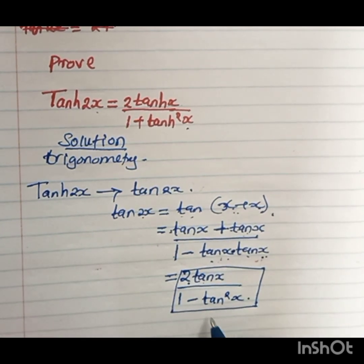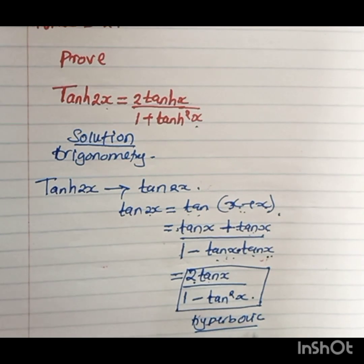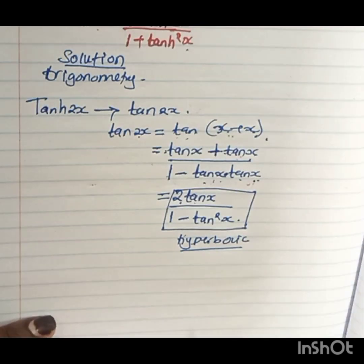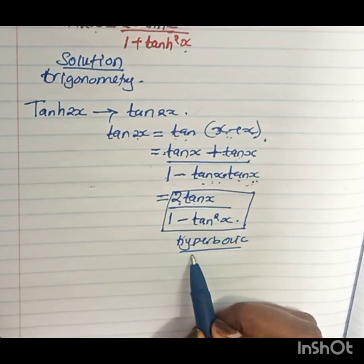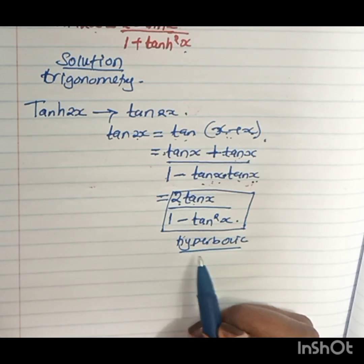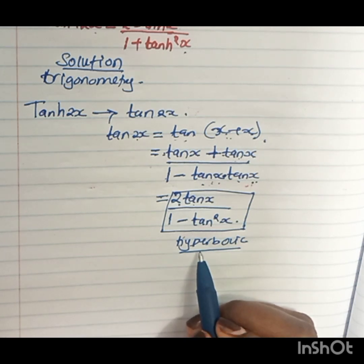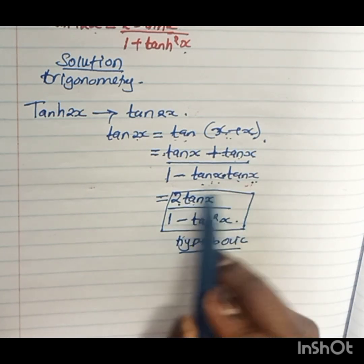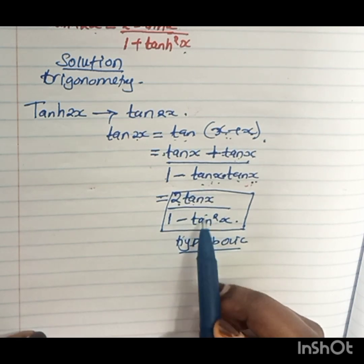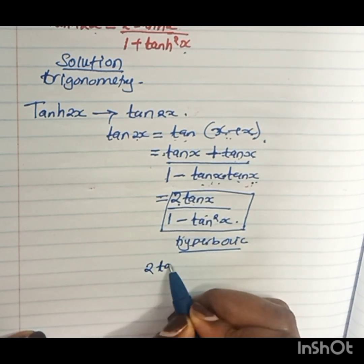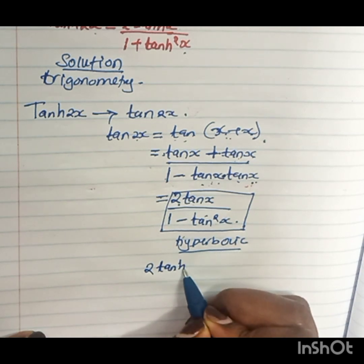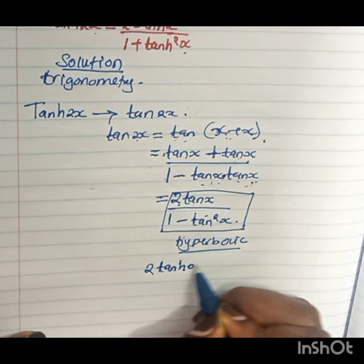Now I'm going to convert this answer to be in hyperbolic. From Osborne's rule, every trigonometric function must have a corresponding hyperbolic function, but we will have to change the sign. So this answer in hyperbolic will have 2 tanh x.